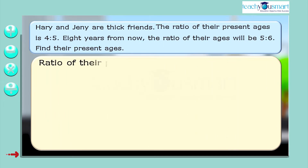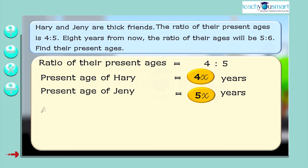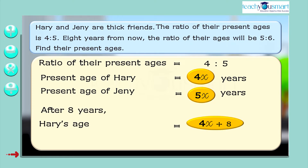The ratio of their present ages equals 4 is to 5. Let's take the present age of Harry and Jenny as 4x years and 5x years respectively. After 8 years, Harry's age is 4x plus 8 years and Jenny's age is 5x plus 8 years.